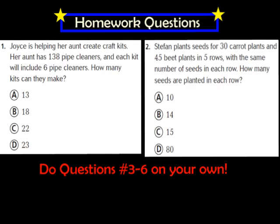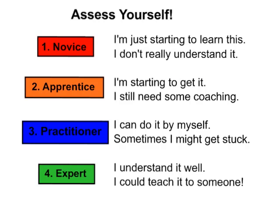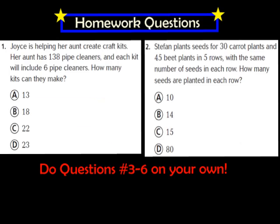Here are your homework questions for tonight. I would like you to complete question number 1 as well as question number 2, and then also numbers 3 through 6. These homework questions can be found on page 20 in your GoMath workbook. Somewhere on your homework page, I want you to let me know: do you feel like you're a number 1 novice, number 2 apprentice, number 3 practitioner, or number 4 expert? I hope you have a great evening and I look forward to seeing you in class tomorrow.